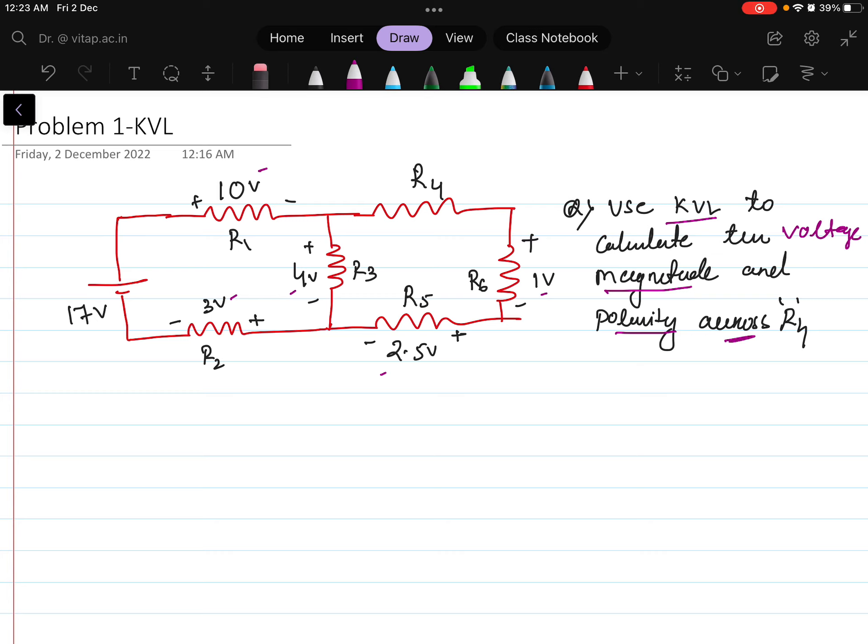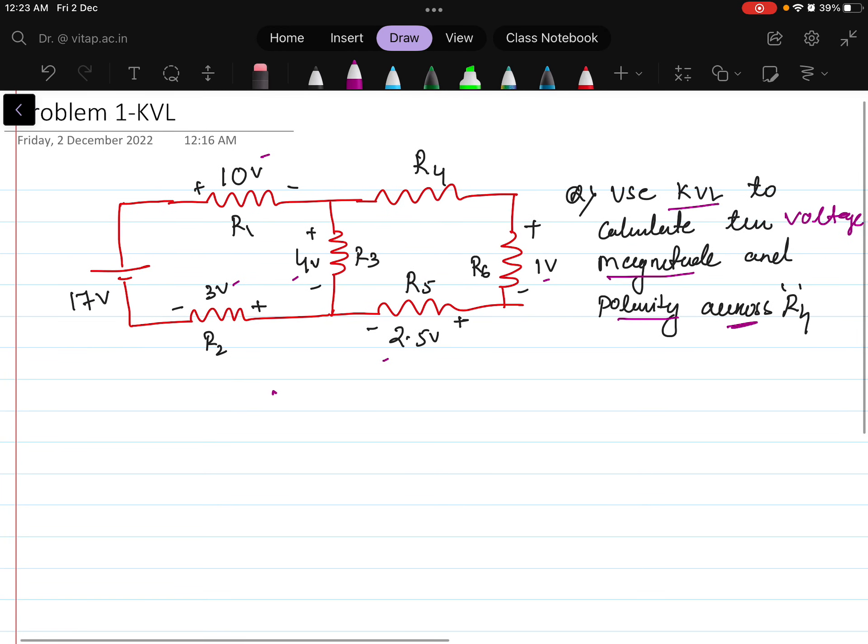Here we have to find what is the voltage. Now we can simply apply the KVL in the loop. If we apply Kirchhoff voltage law here, the loop says that summation of all the voltage in the loop is equals to 0.